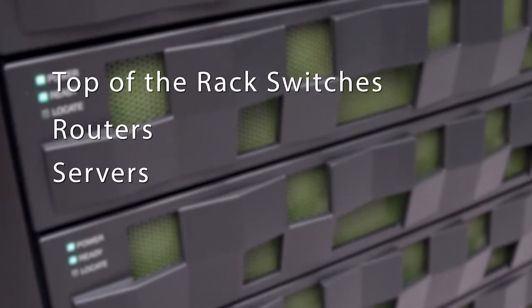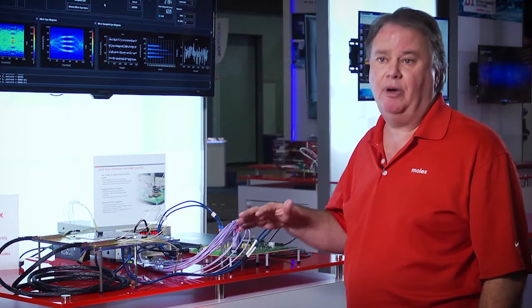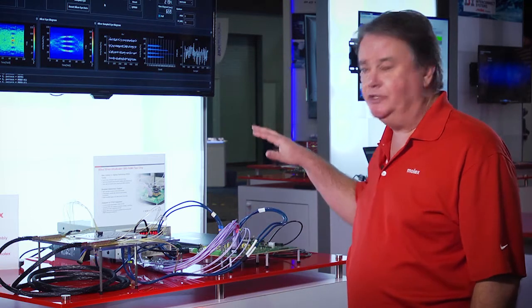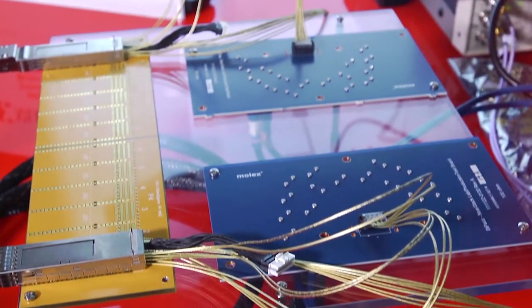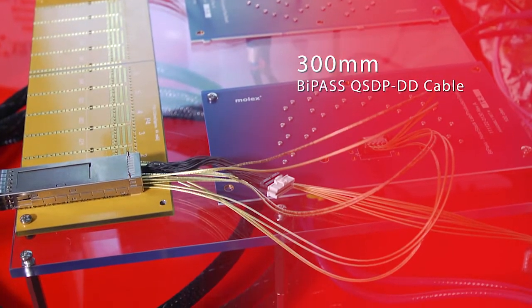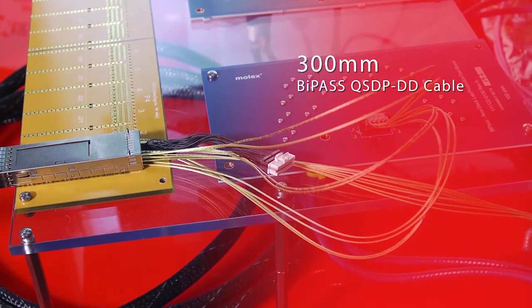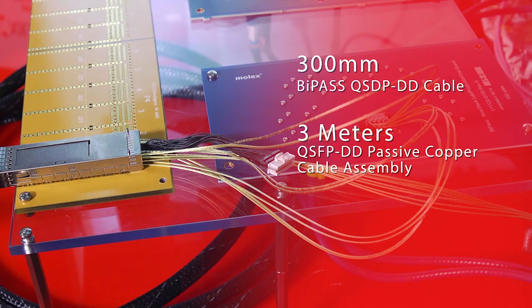What we're seeing here is a complete bypass point-to-point channel running a Xilinx 56 gigabit PAM4 signal. We're running it through 300 millimeters of bypass double density QSFP cable and running through 3 meters of double density QSFP cable, and then back through another 300 millimeter bypass channel.